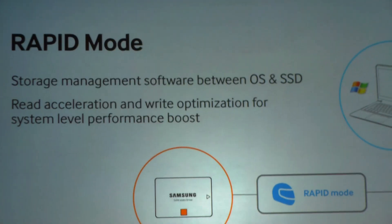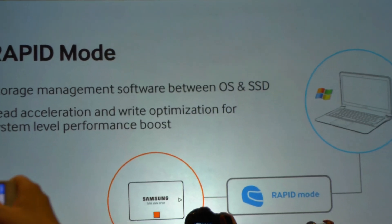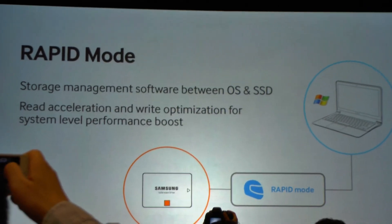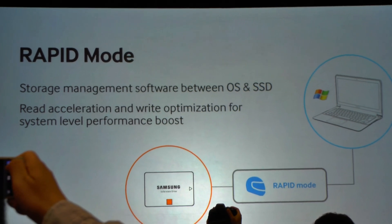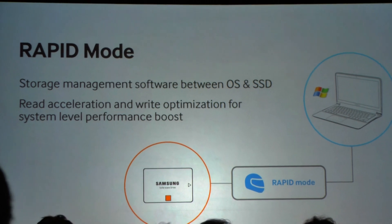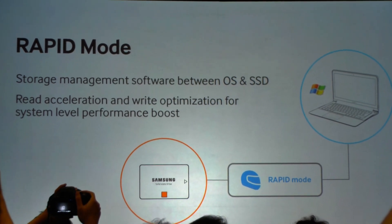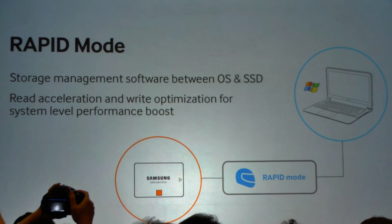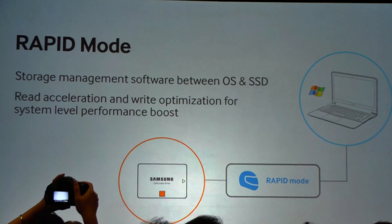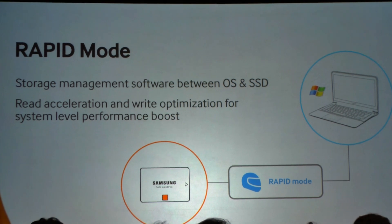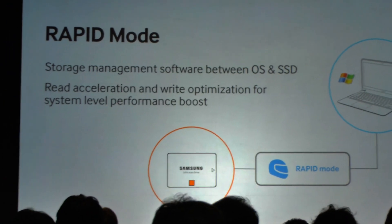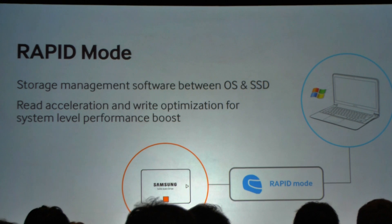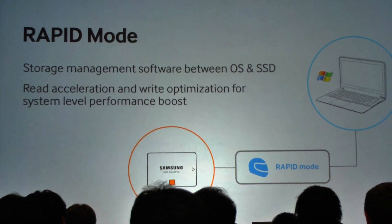What Rapid is, is a software solution which sits on the host PC. It is a storage solution that will watch, actively monitor and manage all the storage IOs that propagate through a system — among and between the Windows operating system, user application files, as well as the SSD. The intention of this solution, which is paired exclusively with the 840 EVO SSDs from Samsung, is to provide read acceleration as well as write optimization for system-level performance boost.